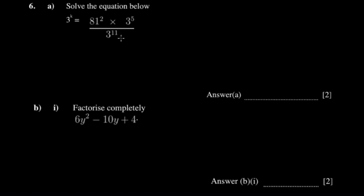Hey guys, so we're continuing with our Paper 2 question paper. This will be really helpful because it touches on algebra — laws of indices as well as vectorization. There's also a little question on variation, which is a very popular topic in both MEDSIMSC and Cambridge. Watch to the end; there will be a gradual value communicated to you. The first question asks you to solve: 3 to the power k equals 81 to the power 2, multiplied by 3 to the power 5, divided by 3 to the power 11.